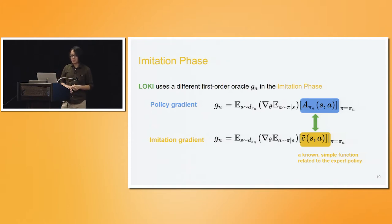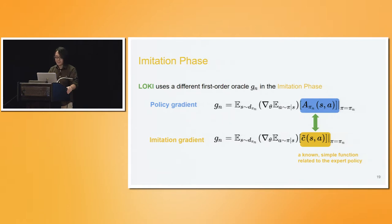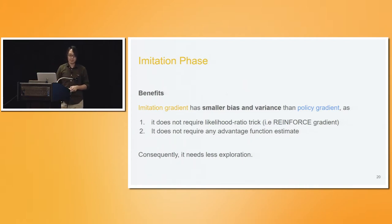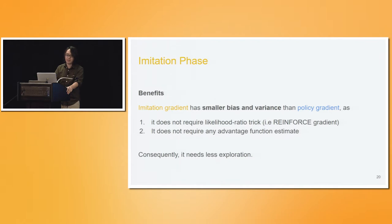To make policy learning faster, another approach is imitation learning. Instead of using policy gradient, imitation learning uses an imitation gradient, which replaces the advantage function in policy gradient with a simple known function related to the expert policy — the cost function delta-C. The immediate benefit is that once we replace it with this simple known function, we don't have to estimate the advantage function anymore. This imitation gradient will have smaller bias and variance compared with policy gradient in general, because you don't need the likelihood ratio trick or value function estimation. As a result, you need less exploration when doing imitation learning, and you won't face the sparse reward problem.